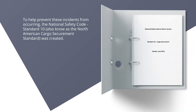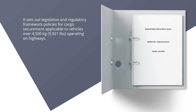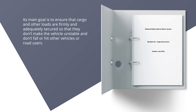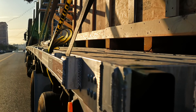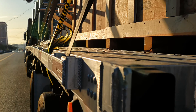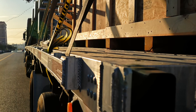To help prevent these incidents from occurring, the National Safety Code Standard 10, also known as the North American Cargo Securement Standard, was created. It sets out legislative and regulatory framework policies for cargo securement applicable to vehicles over 4,500 kilograms, or 9,921 pounds, operating on highways. Its main goal is to ensure that cargo and other loads are firmly and adequately secured so that they don't make the vehicle unstable and don't fall or hit other vehicles or road users.